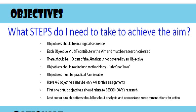It's suggested you have four to eight objectives — probably four to six for this particular assignment. The first one or two objectives will relate to secondary research, reviewing what the literature says and understanding the terms involved. The last one or two objectives will be about your analysis and conclusions or recommendations for action.